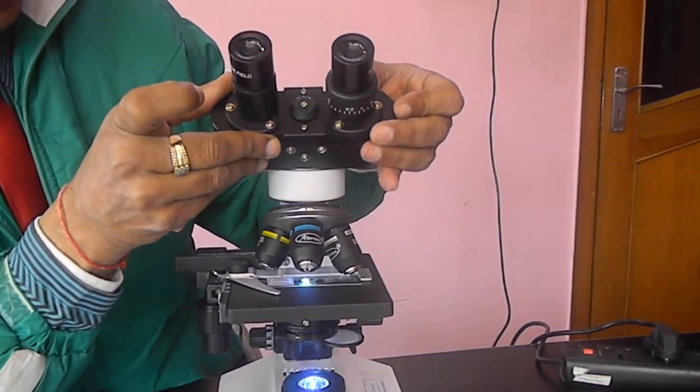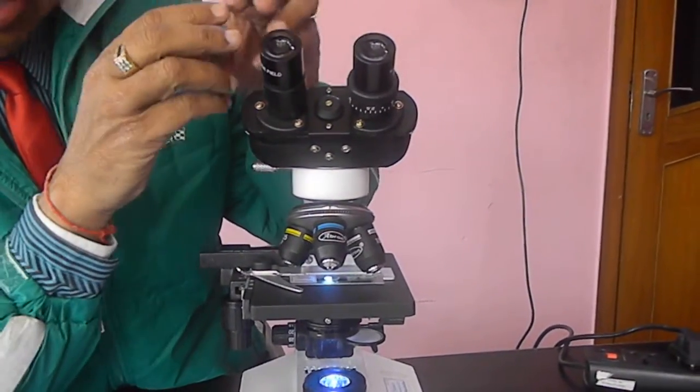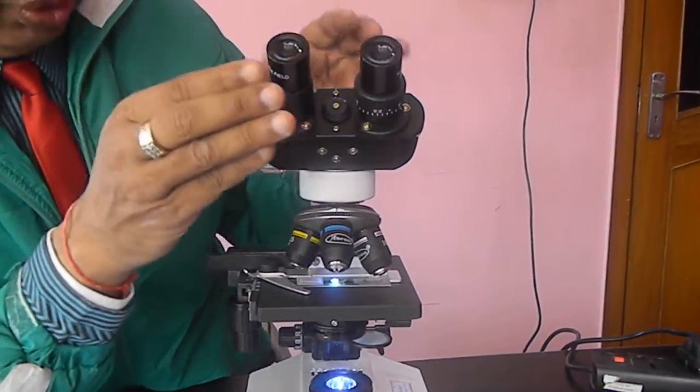Then adjust the interpupillary distance so that the distance between your eyes is having the same image from left as well as on the right side.